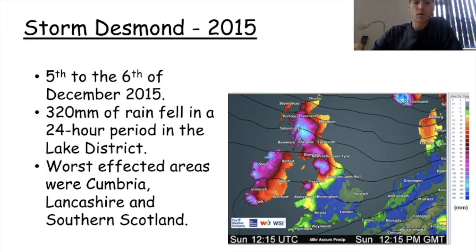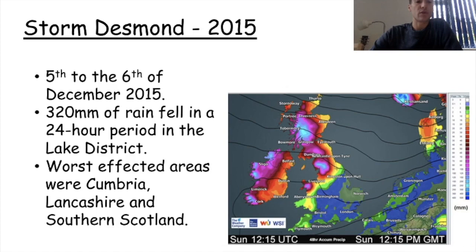We're going to focus in this lesson on a flood event caused by Storm Desmond. Storm Desmond happened in the winter of 2015, when we typically get increased rainfall. It impacted the North West — really impacted Cumbria, Lancashire, and Southern Scotland. You can see on that map where the increased amounts of rainfall were all focused on this North West of Great Britain, and it had some devastating impacts.